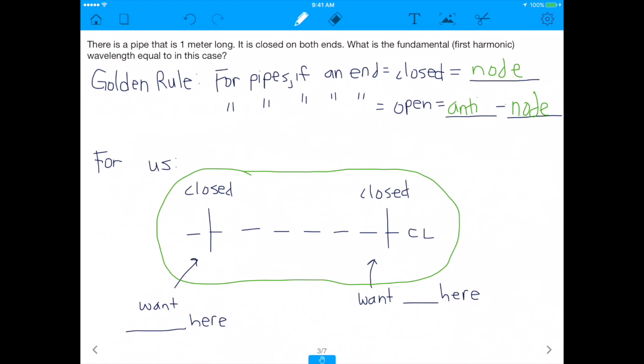So, in our case, in our case, if you look at the diagram I've drawn, we have one closed end and another closed end. Because we have a pipe, if we go back to the original question at the top, we have a pipe that is closed on both ends. So that means, on the left-hand side, and on the right-hand side, we have to have, sorry.